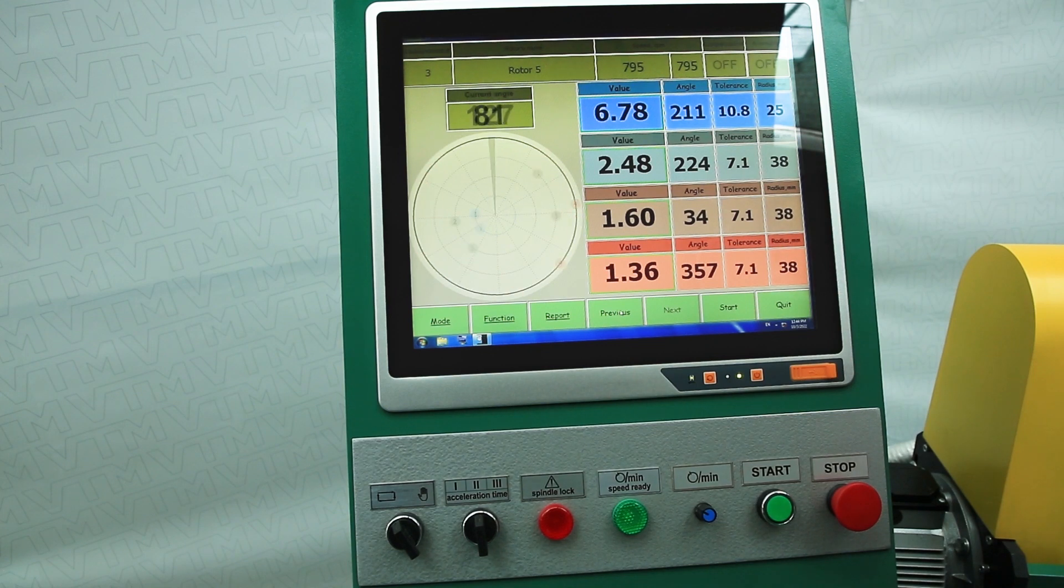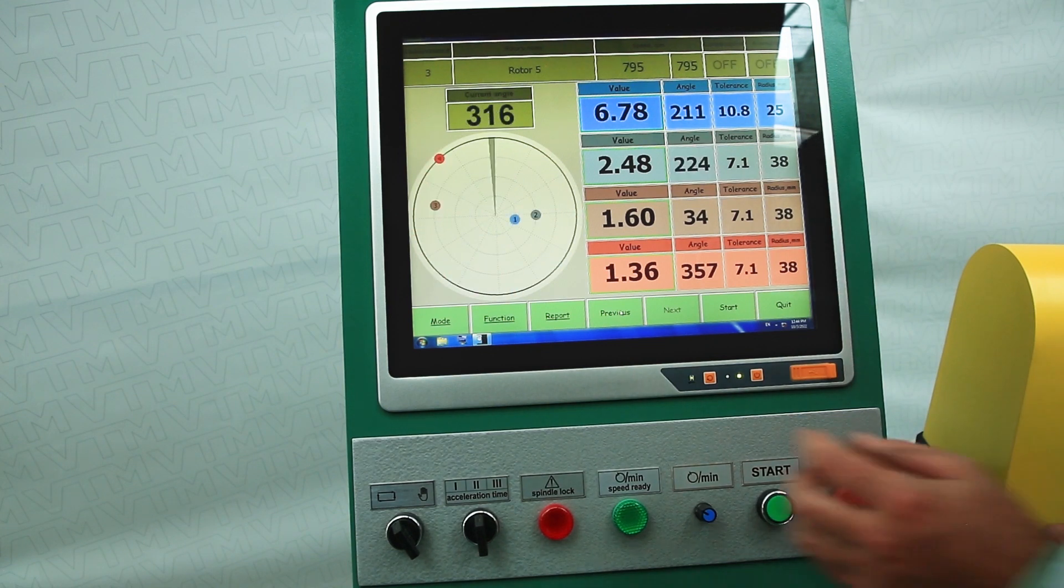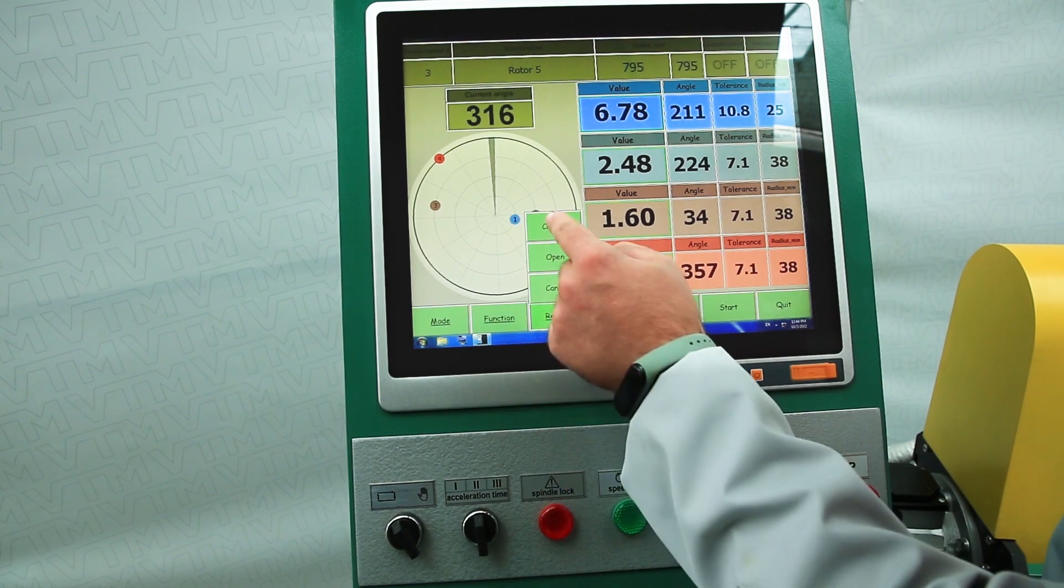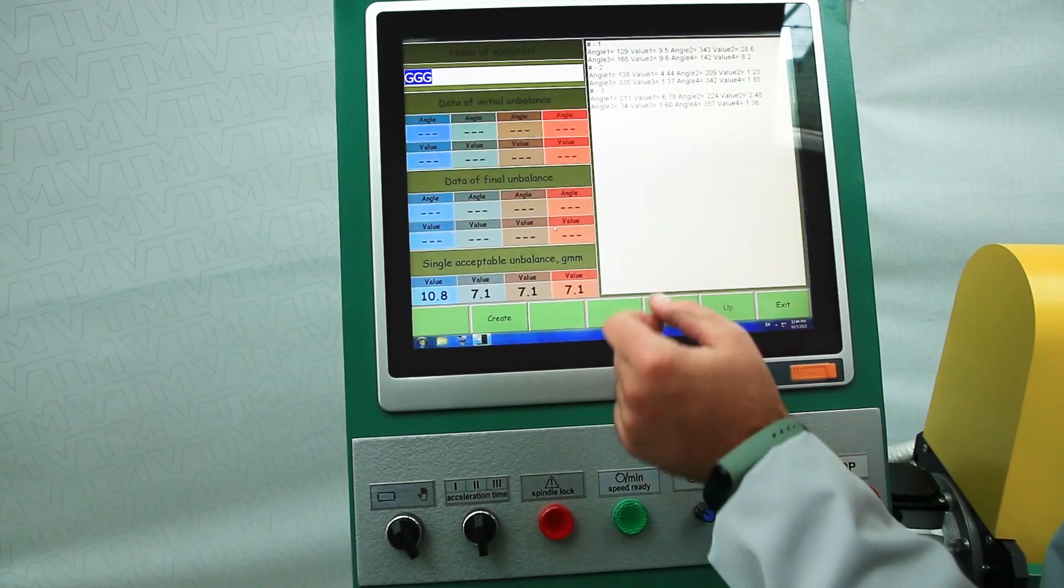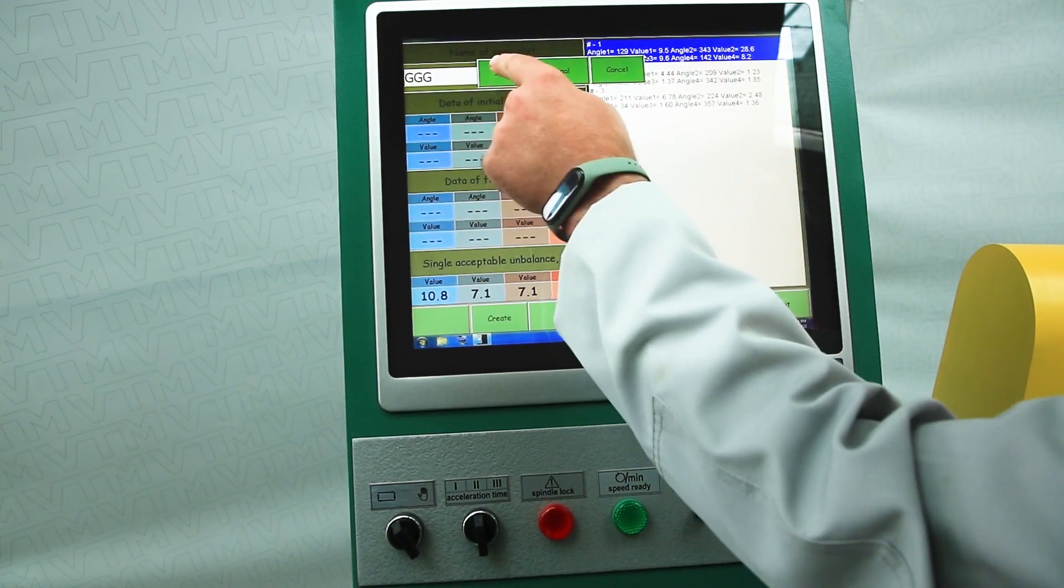As you can see, all the planes fell into the tolerance. After this has happened, click the report, create, select the first start initial and last start final and click the create button.